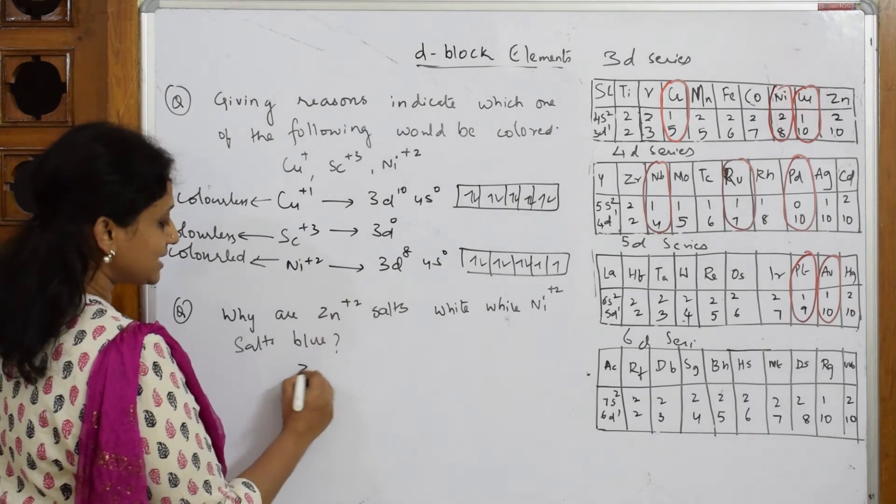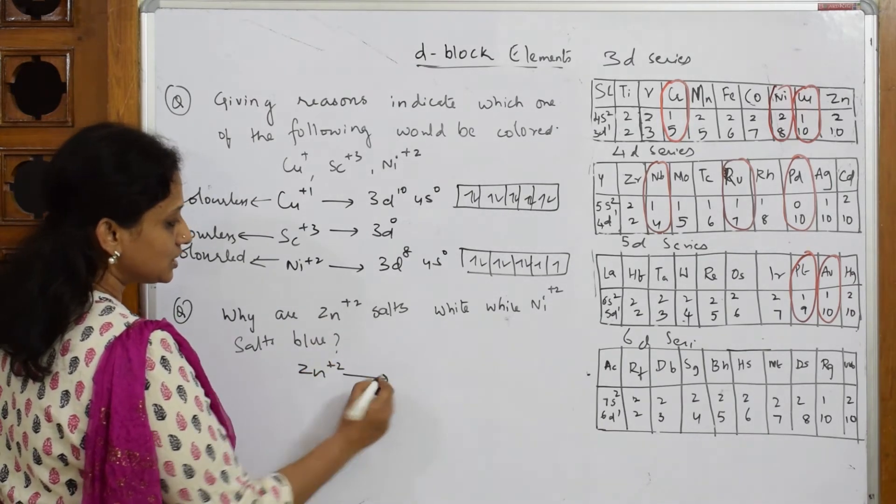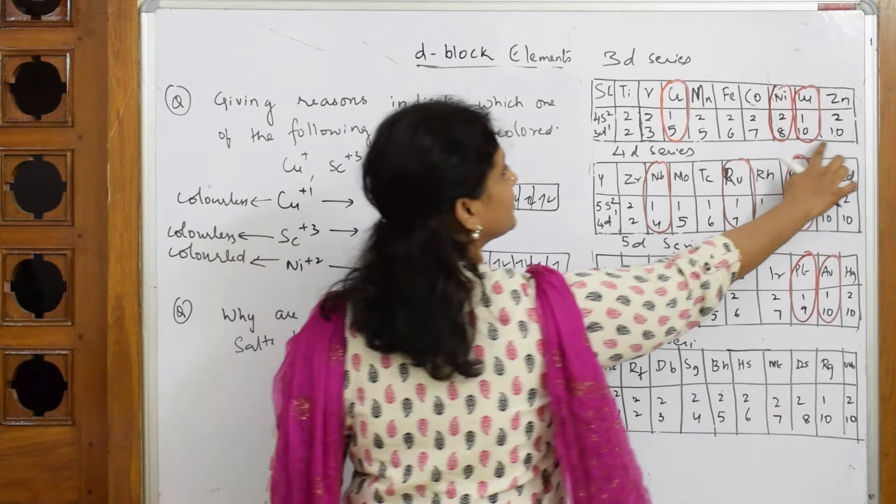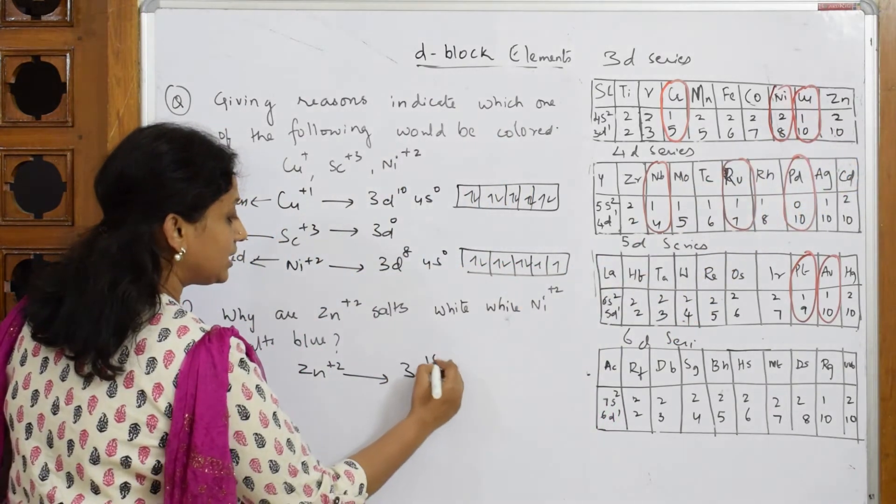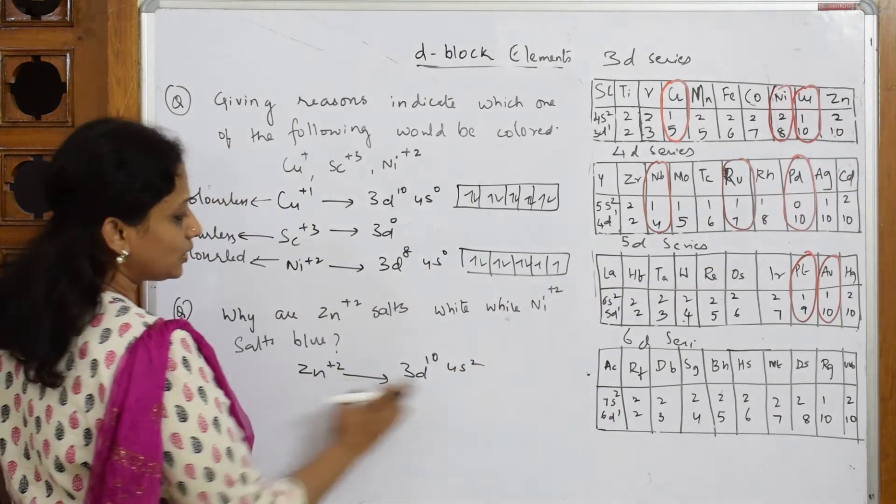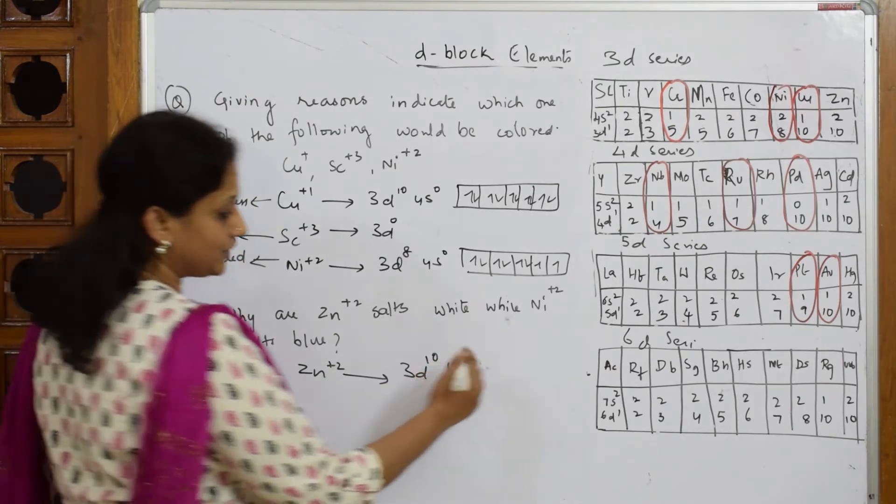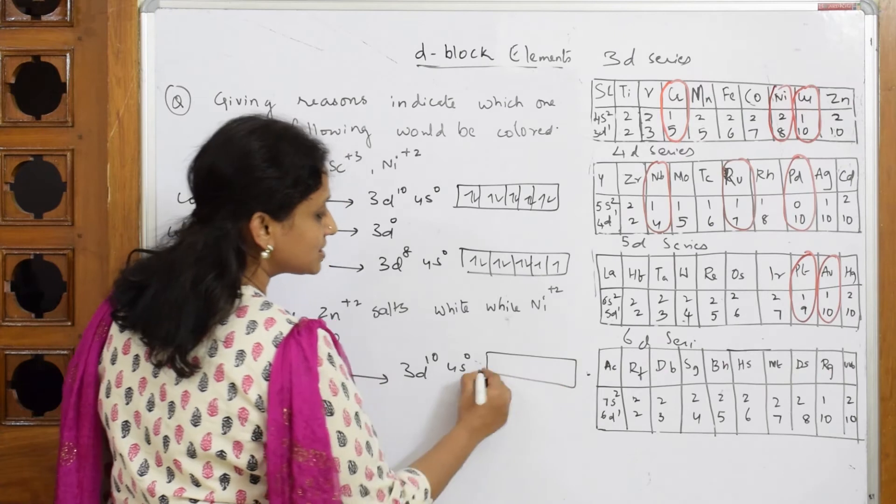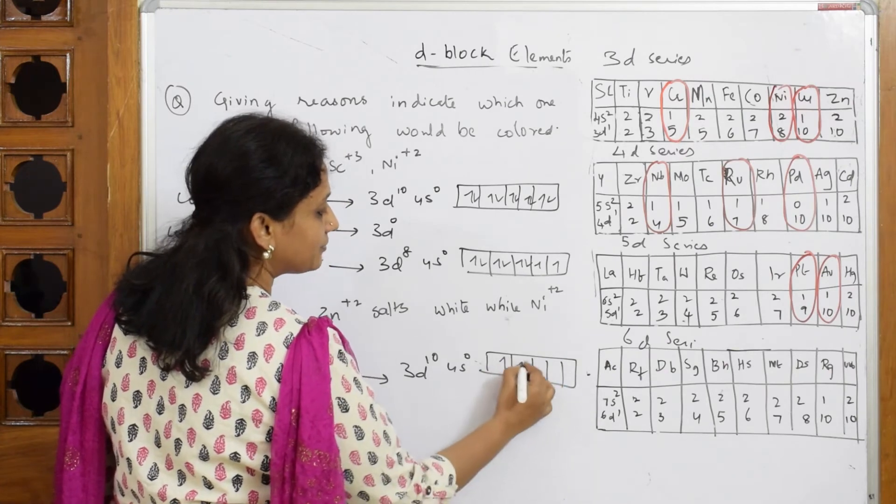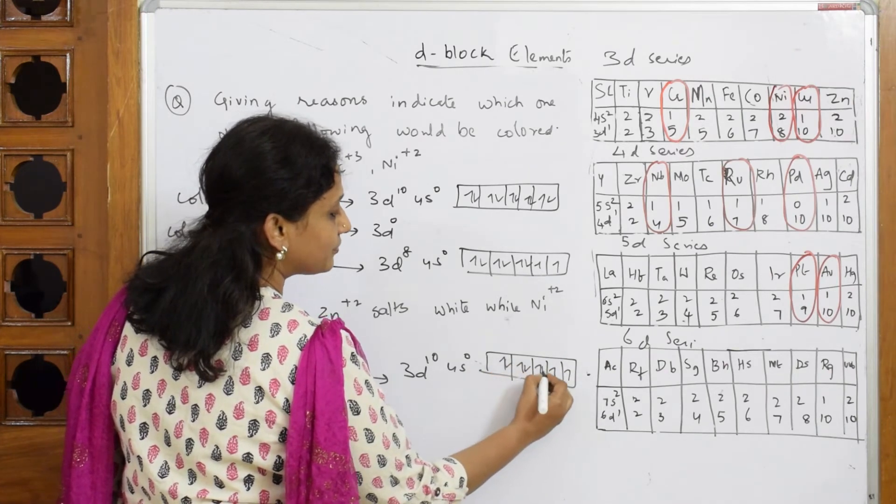When I say Zn2+, what is Zn configuration? Zn configuration is 3d10 4s2. Now take out two electrons, this becomes zero. Now this is fully filled, completely filled. When this is completely filled it doesn't show any color, so it is white in color. Simple.